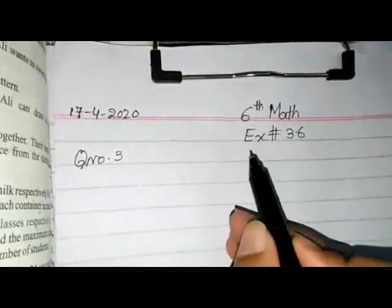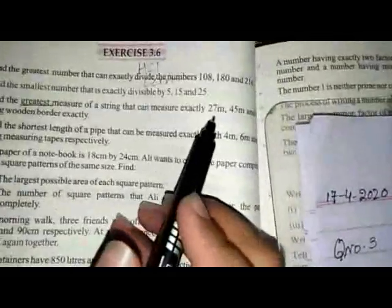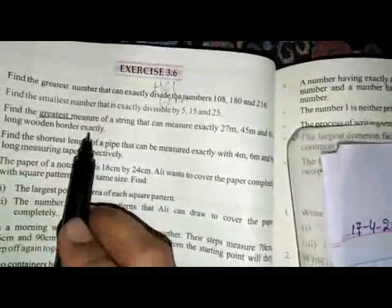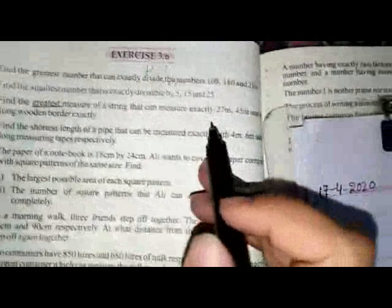Assalamualaikum, class. Today we are doing Exercise 3.6, Question 3. The statement is: find the greatest measure of string that can measure exactly 27 meter, 45 meter, and 63 meter long wooden border exactly. For the greatest measure we find HCF, and for the smallest measure we find LCM. So here we have to find the greatest measure of string.